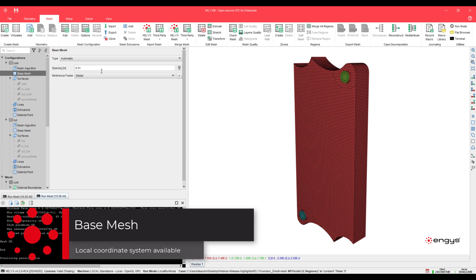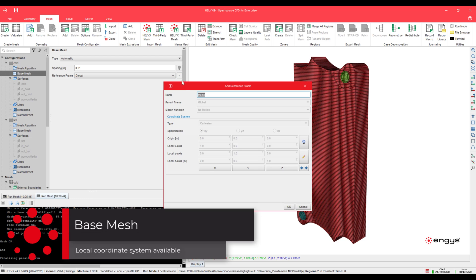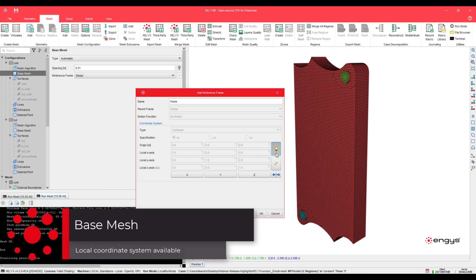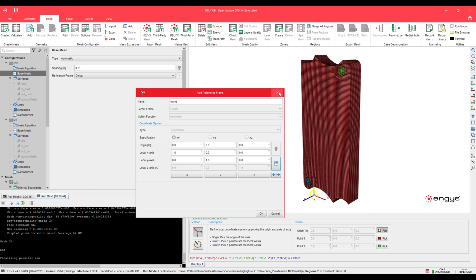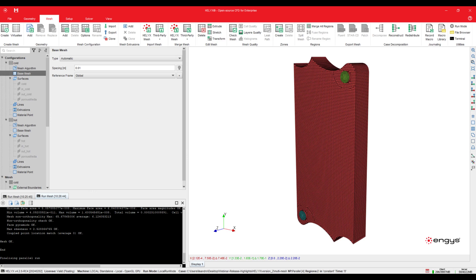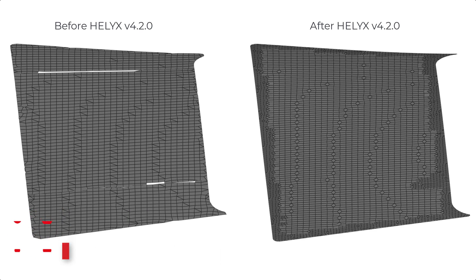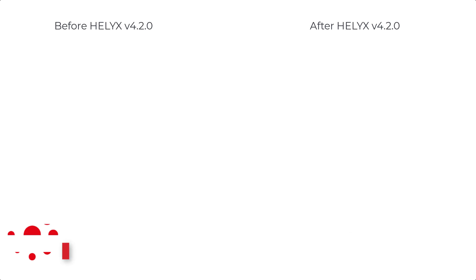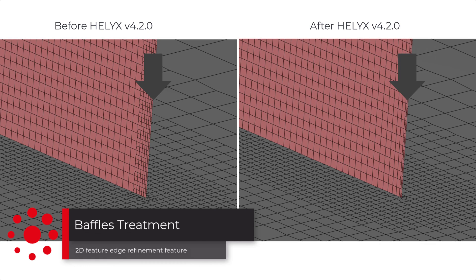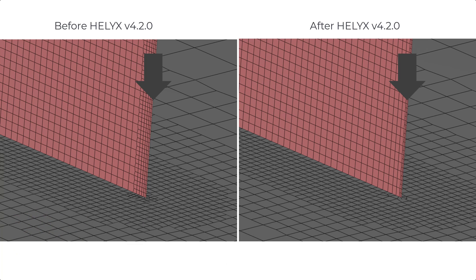Other features of the Helix Mesh Generator algorithm include an interface to align the base mesh to a user-defined local coordinate system, an improved treatment for baffles — such as the removal of isolated regions when generating meshes for zero-thickness surfaces — and the addition of a 2D feature edge refinement for zero-thickness baffle edges. This helps reduce the aspect ratio of cells around edges where it is difficult to achieve good mesh quality using the standard 3D refinement approach.